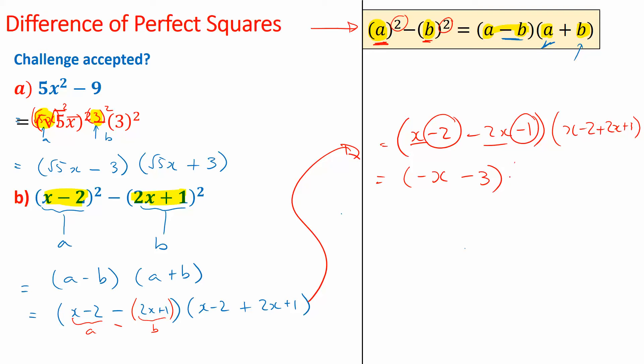Negative three. I'm going to watch out for your negatives when you do your test. You've got negative x minus 3. Next one, same thing: x plus 2x is 3x. Then the constants: negative 2 plus 1 is negative 1. So this is your answer for this question — if you were to factorize it, it simplifies to that. Algebraically it looks complicated, but technique-wise I was just following the same formula: A squared minus B squared equals A minus B times A plus B. That's it.